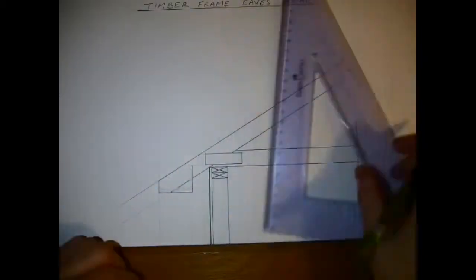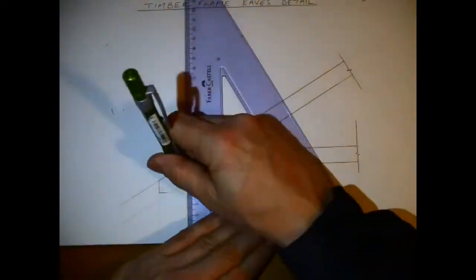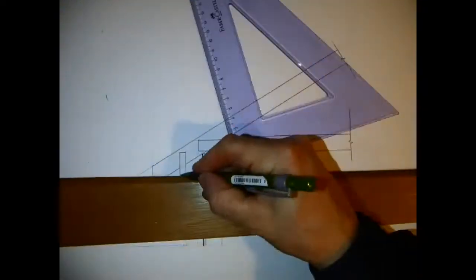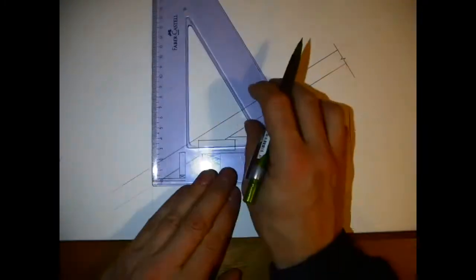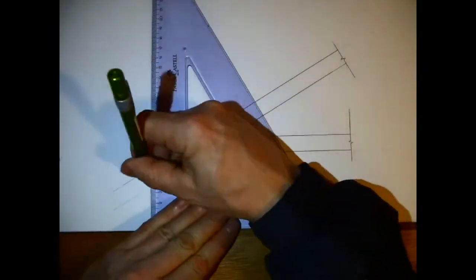You can see where my seat and plumb cut are there - the horizontal and vertical cut at the end of the rafter. To get those particular points is one third on the rafter projected down, and that takes us to the next stage.